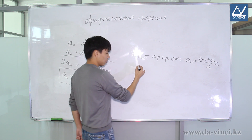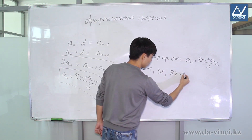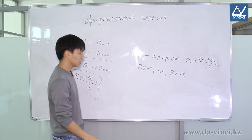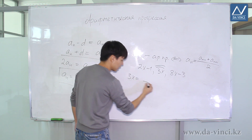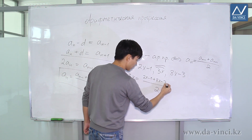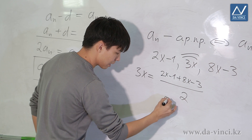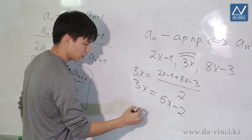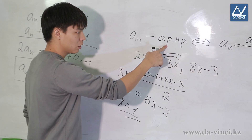Let's take a look at an example. Suppose we have three numbers: 2x minus 1, 3x, and 8x minus 3. We need to find the value of x for which these three numbers form an arithmetic progression. Using the characteristic property, the middle term 3x must equal the arithmetic mean of the two adjacent terms: (2x minus 1 plus 8x minus 3) divided by 2. This gives (10x minus 4) divided by 2, which equals 5x minus 2. Setting 5x minus 2 equal to 3x, we get x equals 1. So these three numbers form an arithmetic progression when x equals 1.